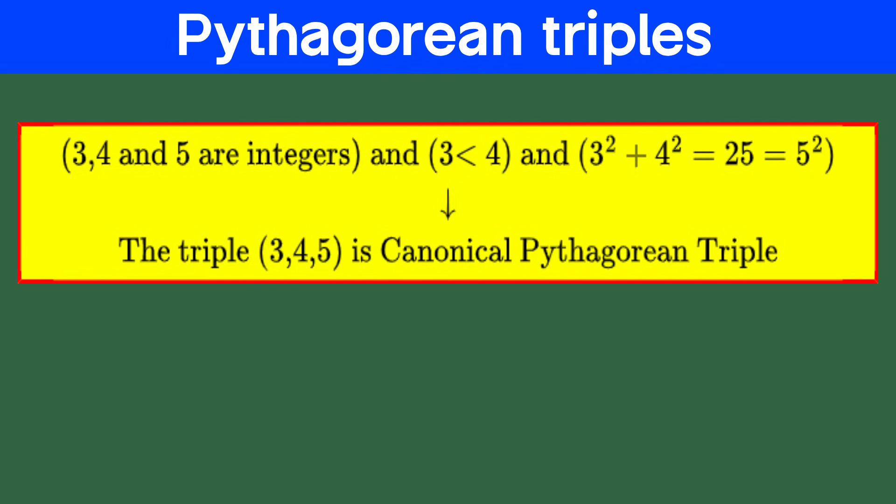You've probably come across the rock star of Pythagorean triples, 3, 4, and 5, it's like the Beyonce of math, everyone knows it, and it's always in the spotlight. Why is it so famous? Let's break it down, 3 squared is 9, 4 squared is 16 and when you add those together, you get 25, which is 5 squared. Boom. It all checks out. Is it magic? Not quite. It's just math doing what math does best, being brilliant and blowing our minds.